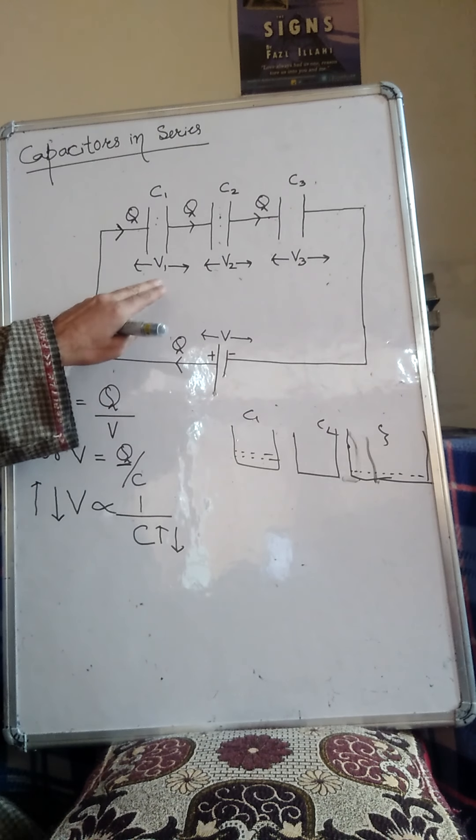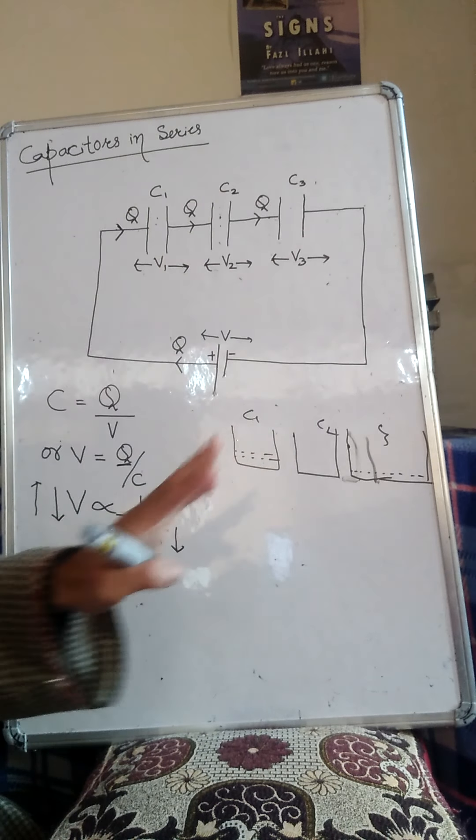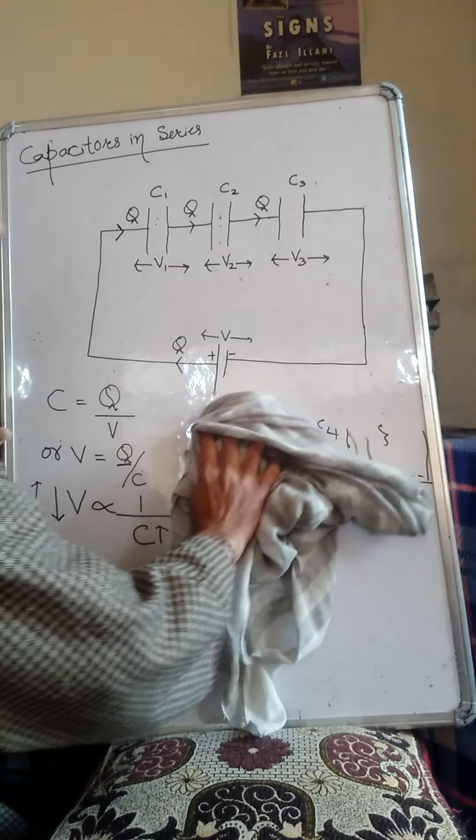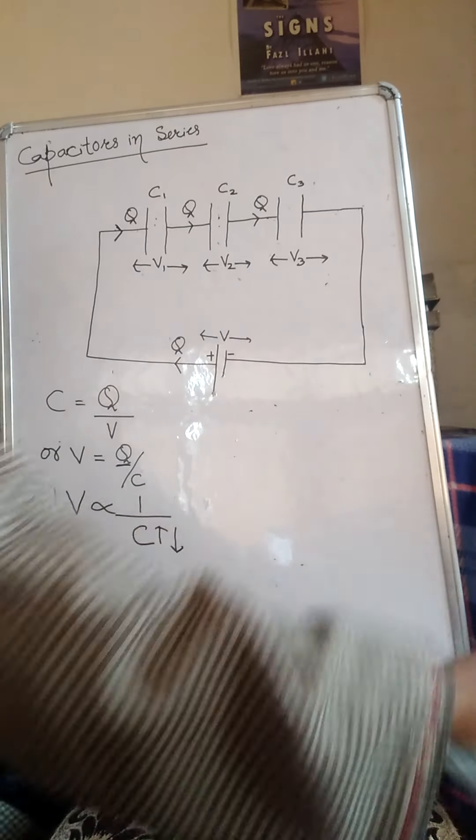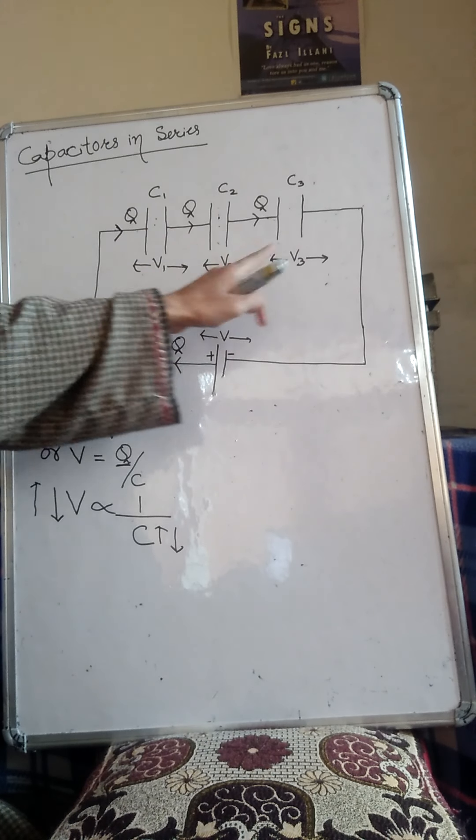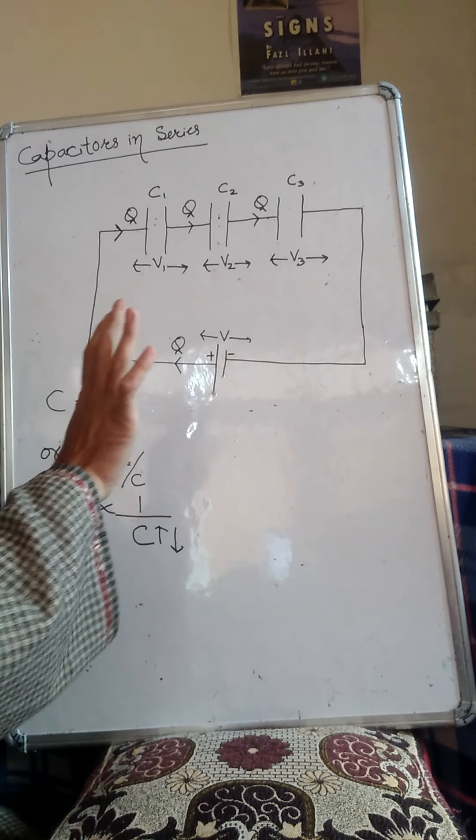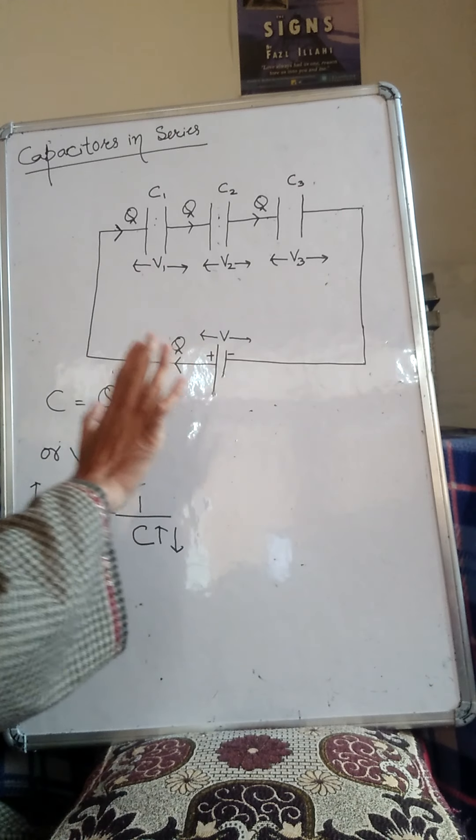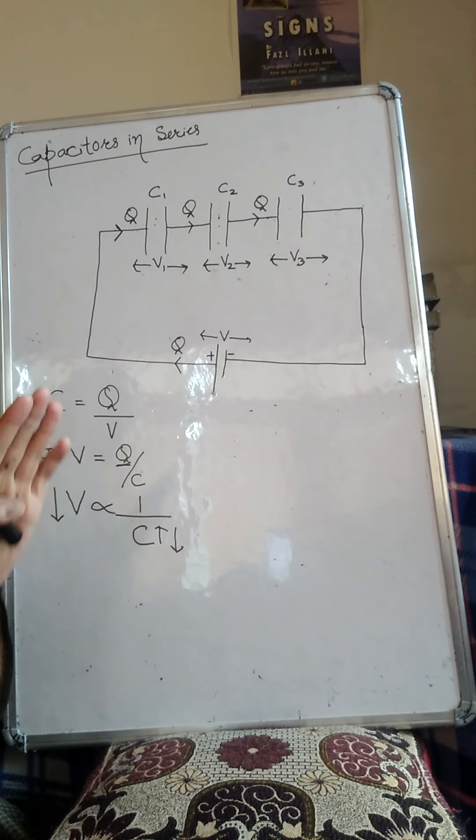So here the level rise will not be the same in all three. Why? Because their capacitances are not the same, their degree of electrification will not be the same. Since their capacitance is different, right? So this means, this point you should remember.